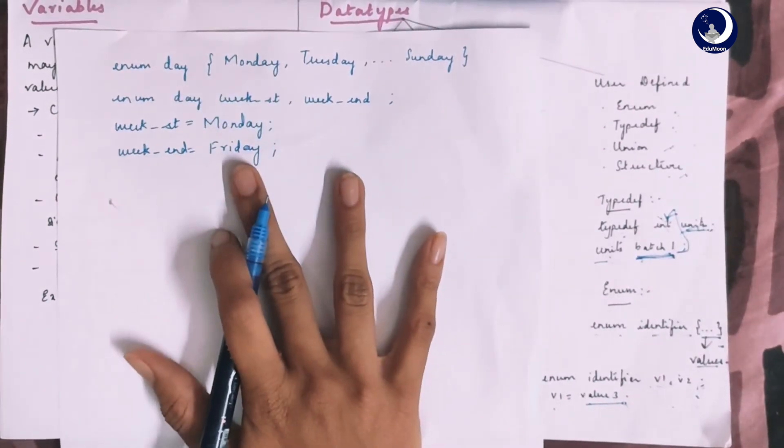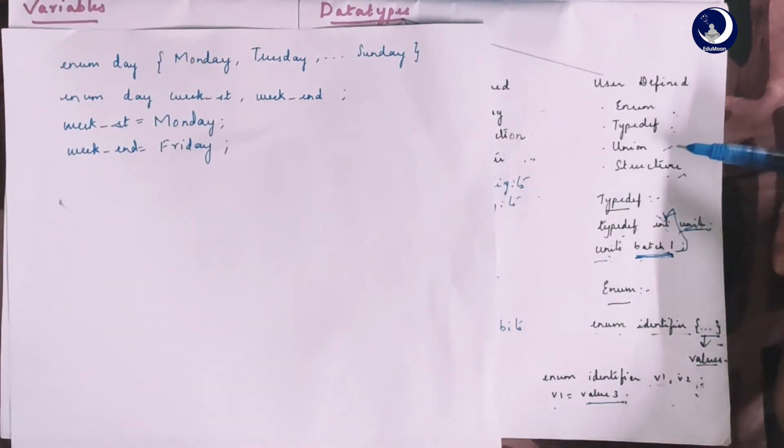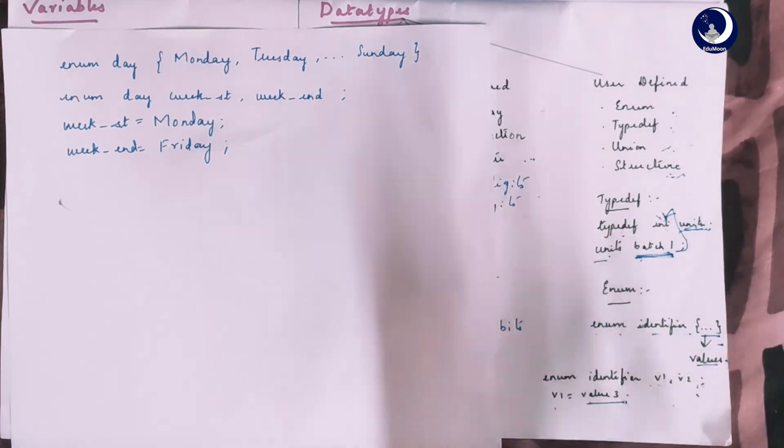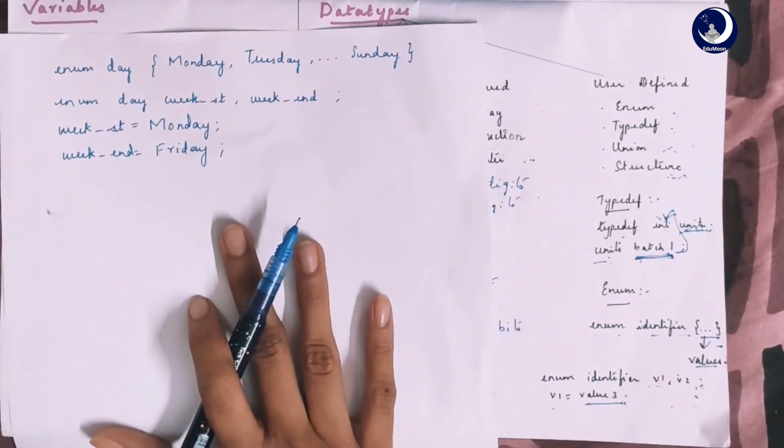That's all about enumerated data types. And talking about union and structure, we will be discussing this in the upcoming lectures. That's all about the first lecture. Thank you.